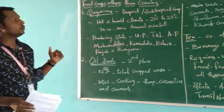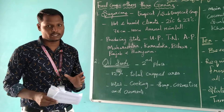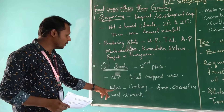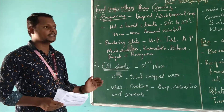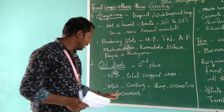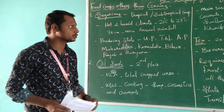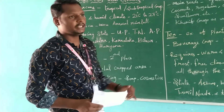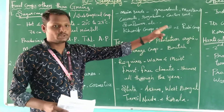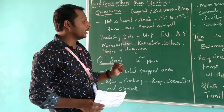Oilseeds cover 12 percent of the total cropped area in our country. We use oilseeds for cooking purposes, and also as raw materials to produce soap, cosmetics, and ointments. Oilseeds are cultivated in both Kharif and Rabi crop seasons.